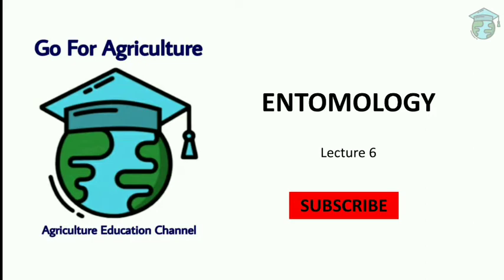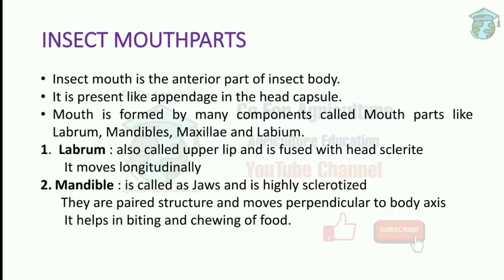The first mouth part is the labrum, also called the upper lip. It is a simple fused sclerite — sclerite means the covering made by exoskeleton. The head sclerite is of five types, of which the clypeus is one type, which is attached to the labrum. It moves longitudinally with the body axis and is hinged with the clypeus.